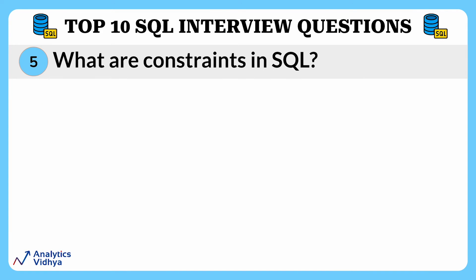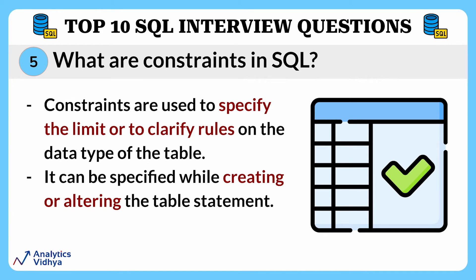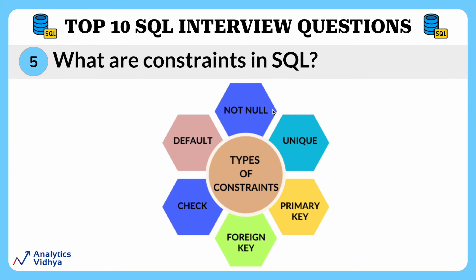The next question is: what are constraints in SQL? This is another very commonly asked question in interviews. Constraints in SQL are used to specify the limit or clarify rules on the data types of a table. Think of constraints like rules or restrictions applied to your database tables to make sure that data stored in them is accurate, reliable, and consistent. If there is any violation between the constraints and the data action, the action is aborted. Constraints can be specified while creating or altering a table. The first type is NOT NULL — it ensures that a column must always have a value and cannot be left empty or null. Next is UNIQUE — it guarantees that values in a specific column are distinct, meaning no duplicates.